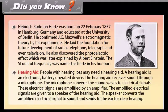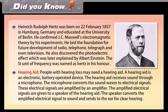Hearing aid. People with hearing loss may need a hearing aid. A hearing aid is an electronic battery operated device. The hearing aid receives sound through a microphone. The microphone converts the sound waves to electrical signals. These electrical signals are amplified by an amplifier. The amplified electrical signals are given to a speaker of the hearing aid. The speaker converts the amplified electrical signal to sound and sends to the ear for hearing.